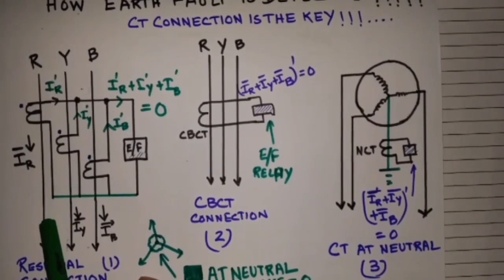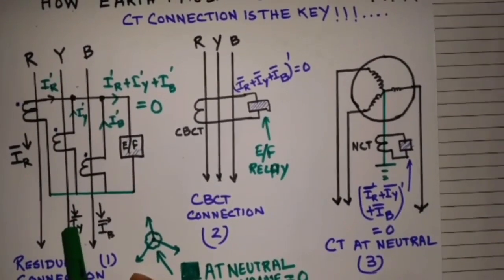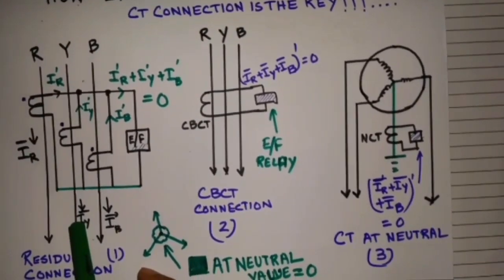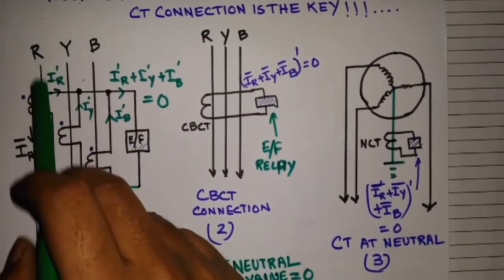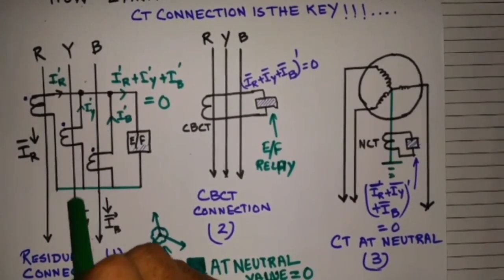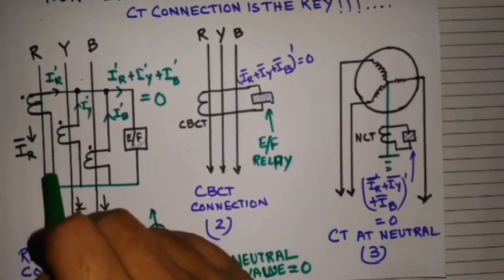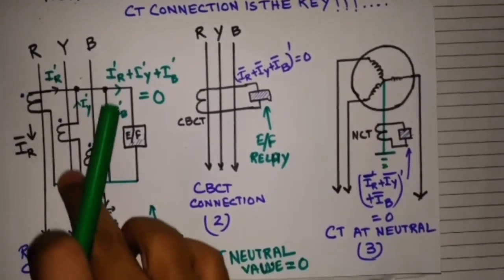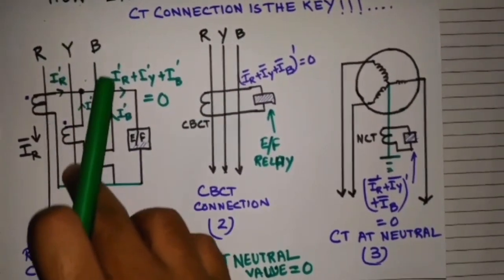But if there is a fault between IR and IY, a line-to-line fault, then the current will come through IR to the faulted path and it will return back through IY. So again, if IR is in this direction, IY will be in that direction.